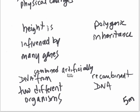DNA combined artificially from two different organisms is called this. I've also seen a definition of this where it just simply says DNA from two different organisms is called this.